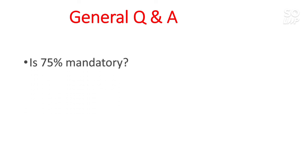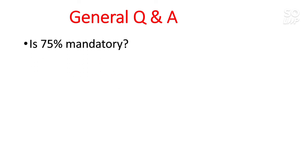Now for general questions and answers: Is the 75% criterion mandatory? Yes, it is mandatory for all, whether you are a dropper or not. If you are going to give the improvement exam, don't worry — once you get your improved result above 75%, you will then be considered for admission.